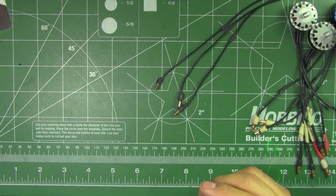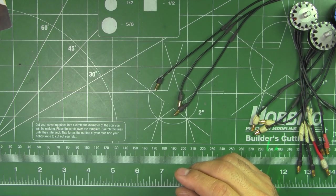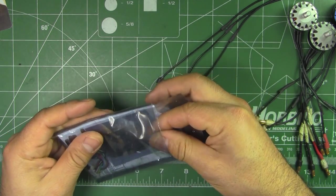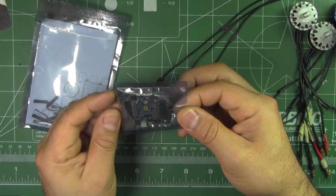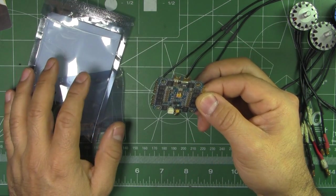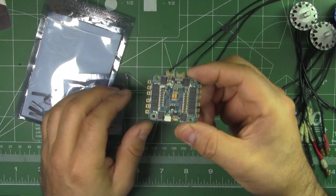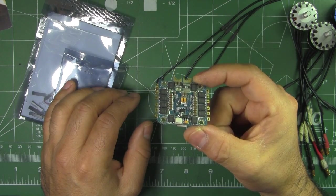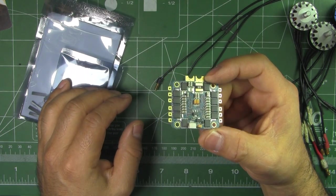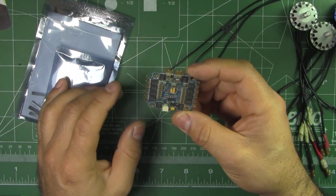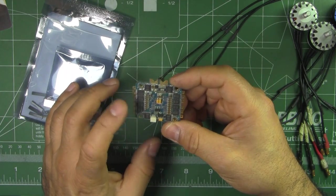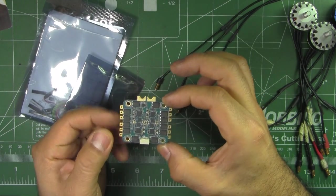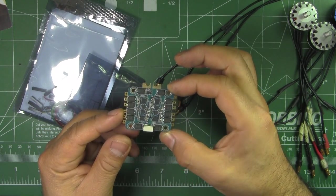They also sent their 4-in-1 ESC and this one they're saying is D-Shot compatible. It's a 30 amp ESC and it's 35 by 35, so this one's going to be interesting to test.